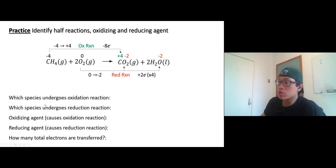So basically, carbon loses eight, and all four oxygens gain two each, so that's eight total. Which species undergoes oxidation reaction? Carbon, so methane CH4, the whole thing, not just carbon. It's not an atom, this carbon comes in a molecule. Which species undergoes reduction reaction? Oxygen gas. Oxidizing agent, so methane goes through oxidation reaction, oxygen makes it happen. So oxygen is an oxidizing agent.